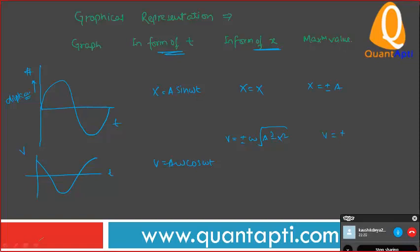Maximum value B is equal to plus minus omega A. Okay, if we are talking about the acceleration, then where does it start? From A, down, negative.